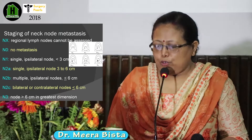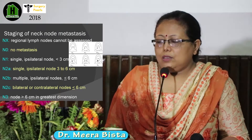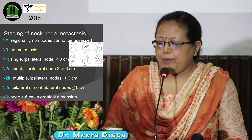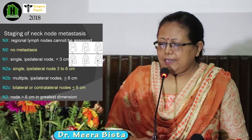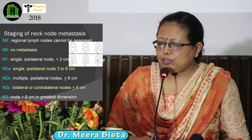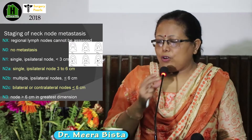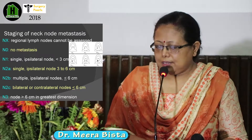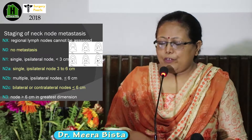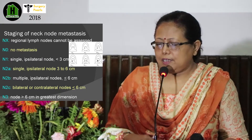N2 is divided into 2A, 2B, and 2C. N2A is a single ipsilateral node 3 to 6 cm. N2B is multiple ipsilateral nodes, each less than or equal to 6 cm. N2C is bilateral or contralateral nodes 6 cm or less. If any node anywhere is more than 6 cm, it is N3.